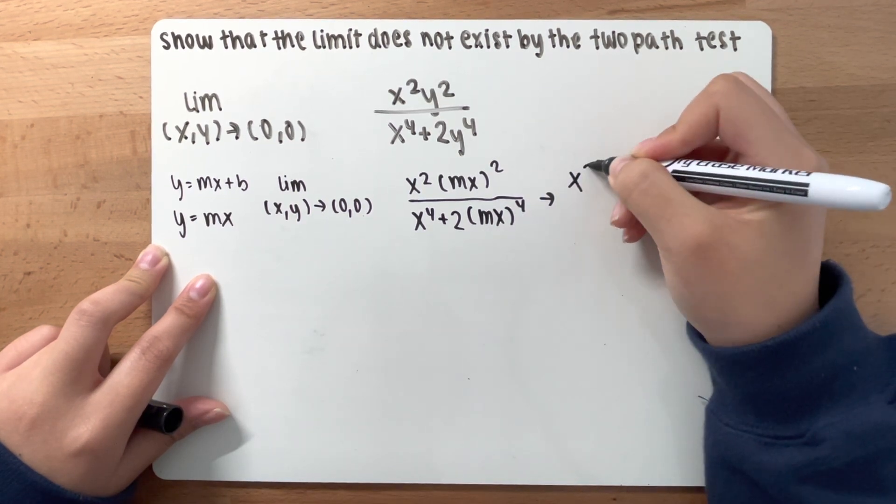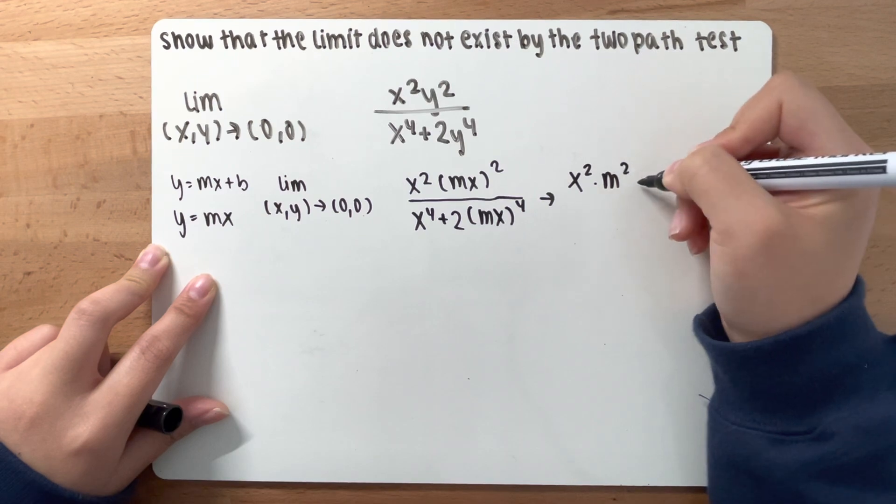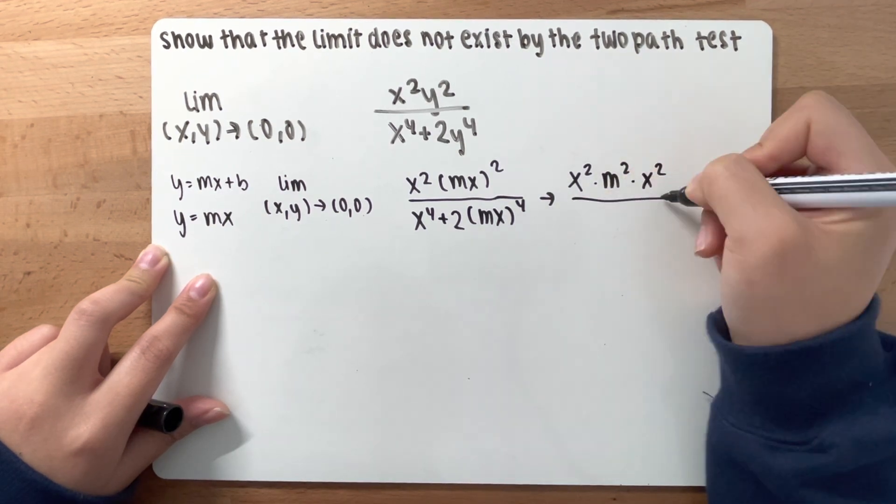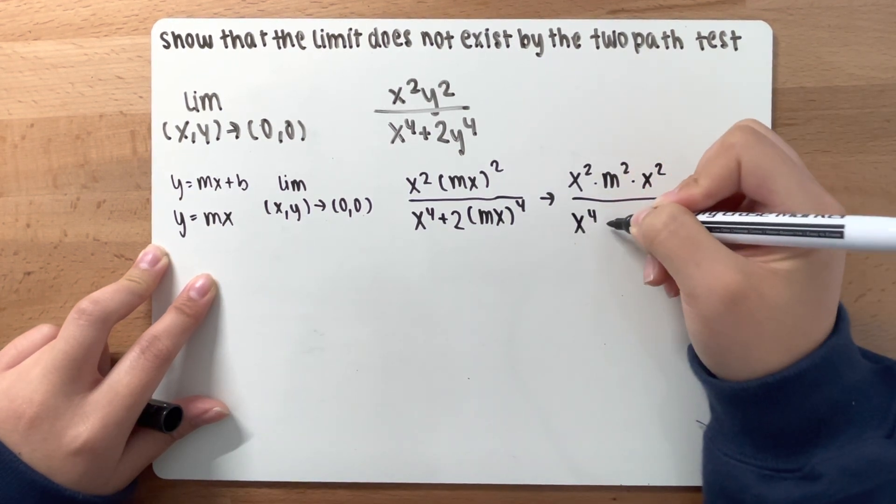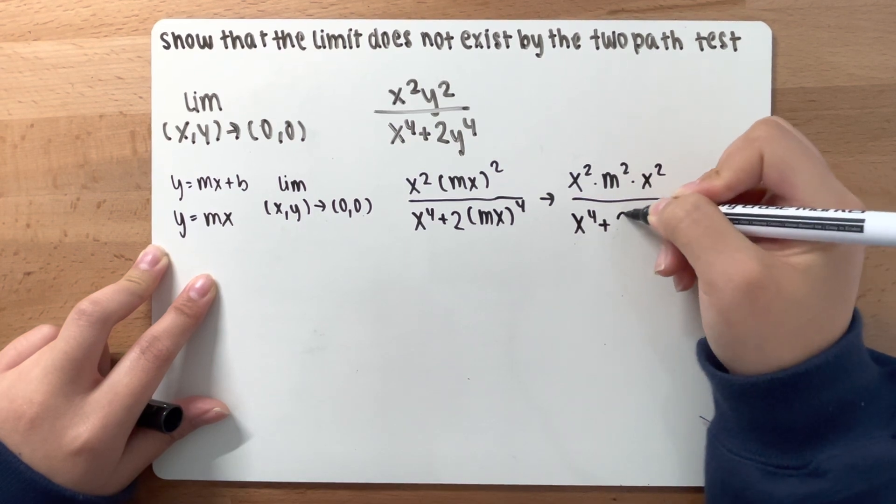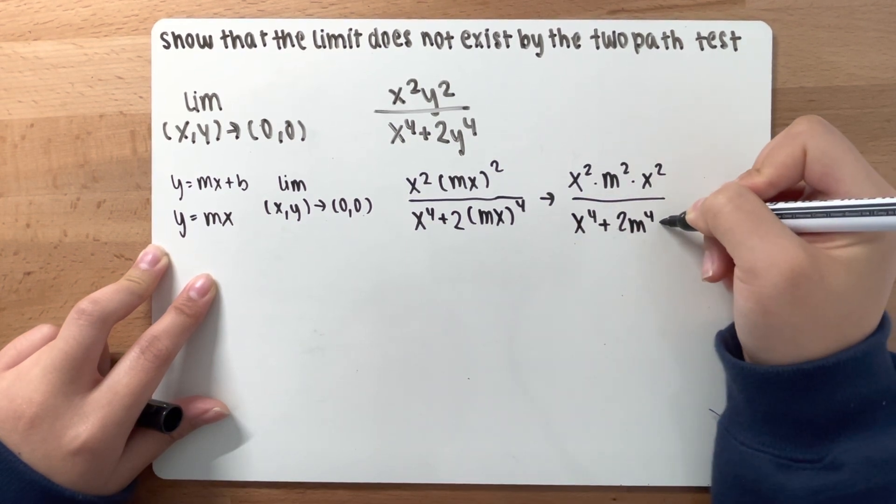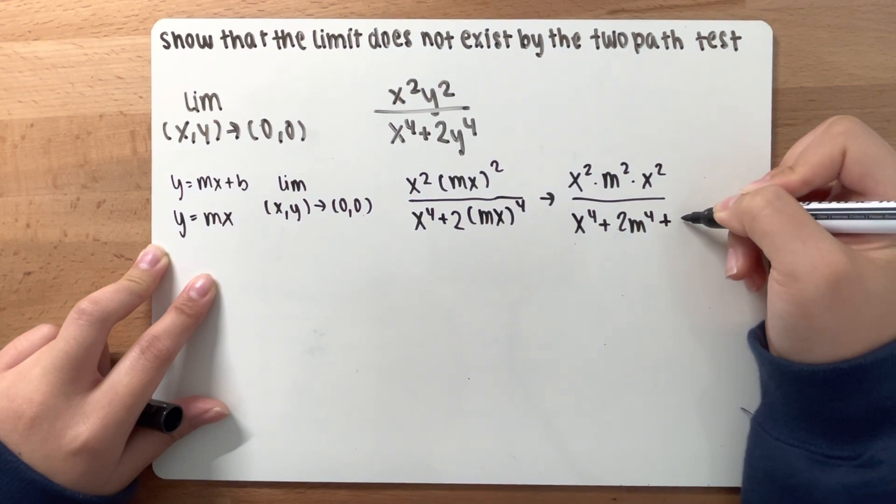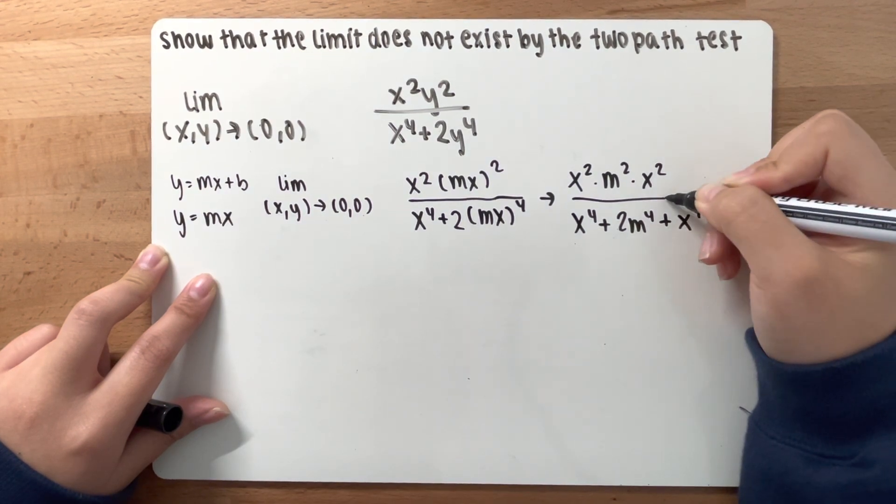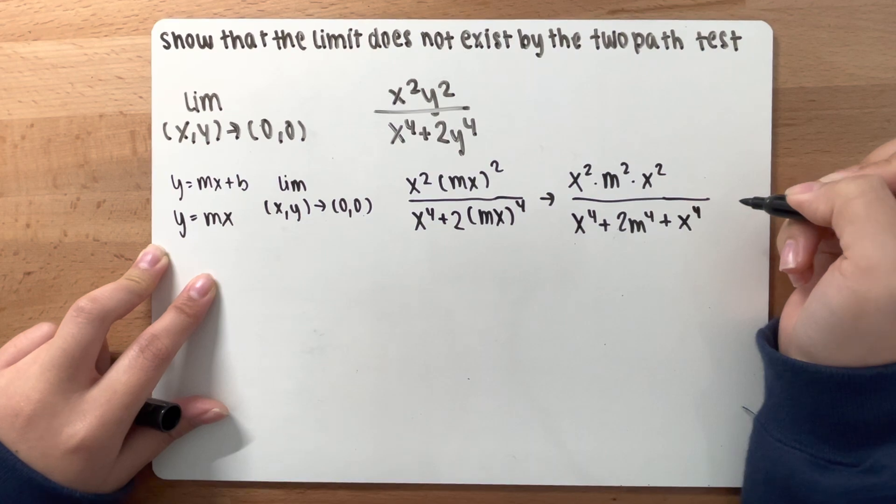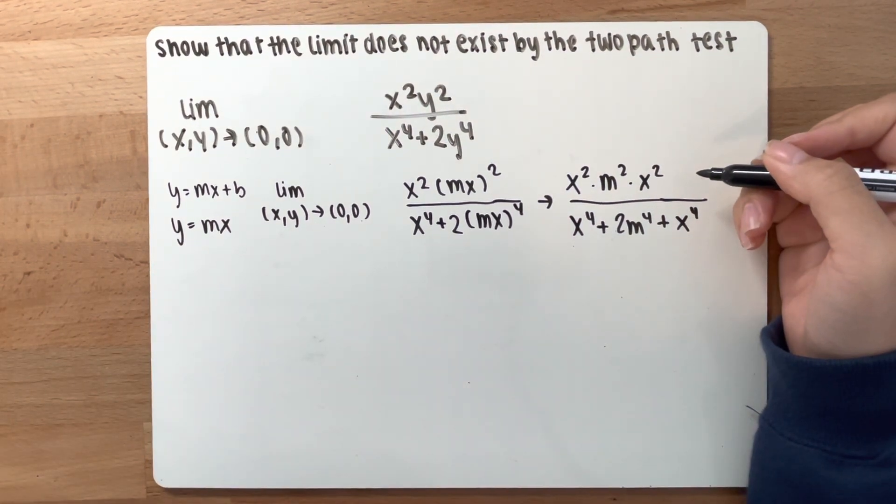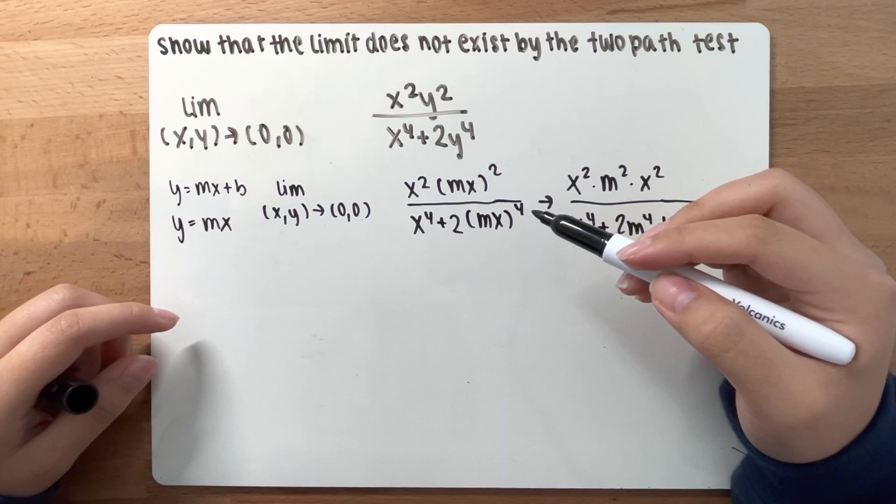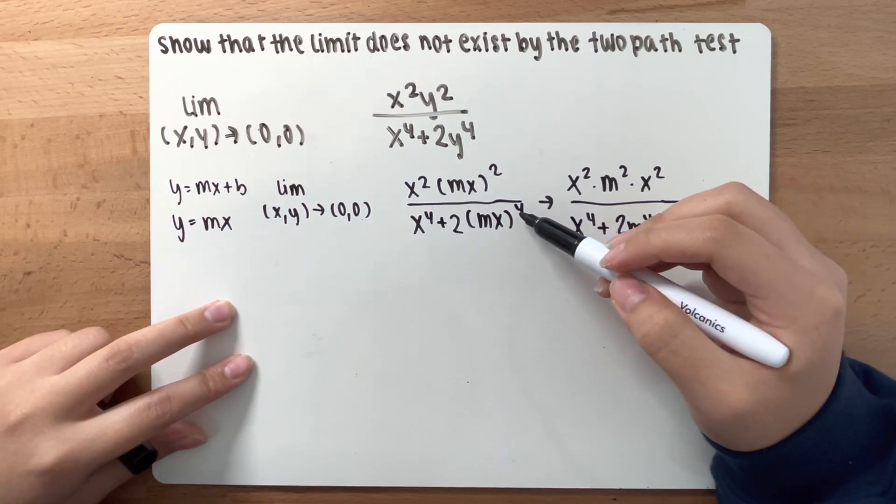So you are going to have x squared times m squared times x squared over x to the fourth power plus 2m to the fourth power. And the reason why you don't distribute the two is because PEMDAS, you do the exponents first.